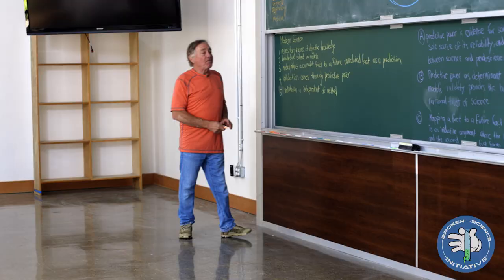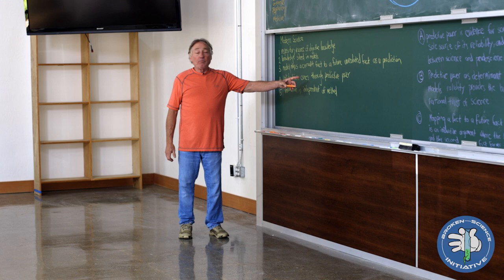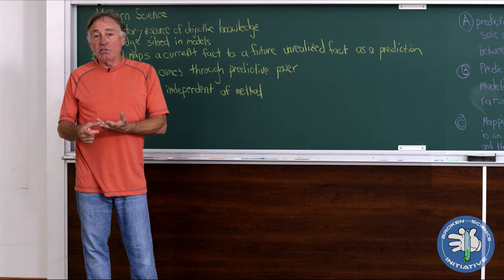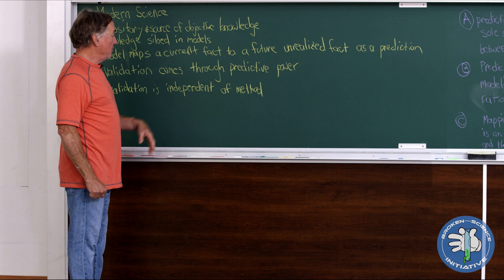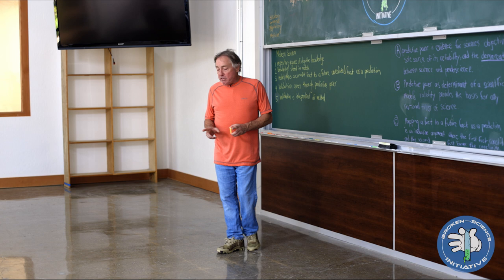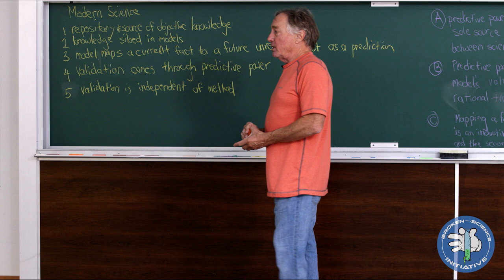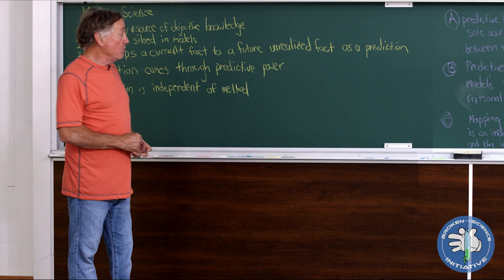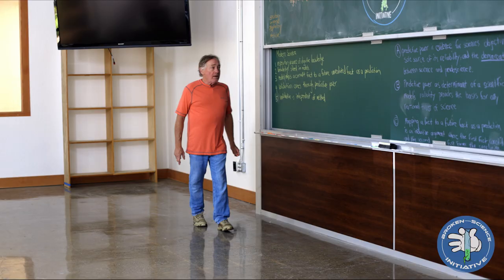And what a model does is it maps a current fact to a future unrealized fact as a prediction. Validation comes through predictive power, solely through predictive power. There's no other road to validation. In fact, the models come in four flavors: conjecture, hypothesis, theory, and law. And those have been well delineated in terms of their predictive strength. And number five, validation is independent of method. And that's a critical point. There isn't a method that guarantees an outcome that replicates. Whether the theory comes from inspiration or perspiration, its validation comes solely through its predictive power. So these are the five facets that are critical to modern science.